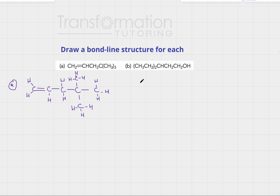How do we draw a bond line structure? A bond line structure is a way to simplify our molecule. In a bond line structure, hydrogens on carbons are not shown but are implied, and carbons are not shown either — we draw a zigzag line. For example, if I have CH3-CH2-CH3, I draw it as a zigzag. Anytime I have the end of a line or two lines meeting, that represents a carbon. Hydrogens are implied because each carbon wants four bonds.